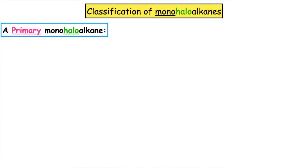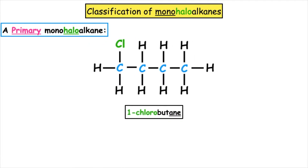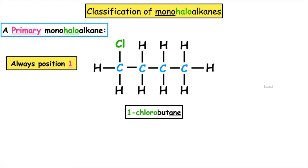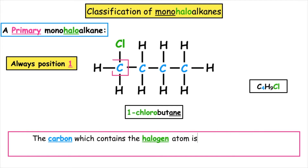A primary monohaloalkane, such as 1-chlorobutane, will always have the halogen — in this case chlorine — in position 1. The definition of a primary monohaloalkane is that the carbon which contains the halogen atom is bonded to one other carbon atom or one other alkyl group.